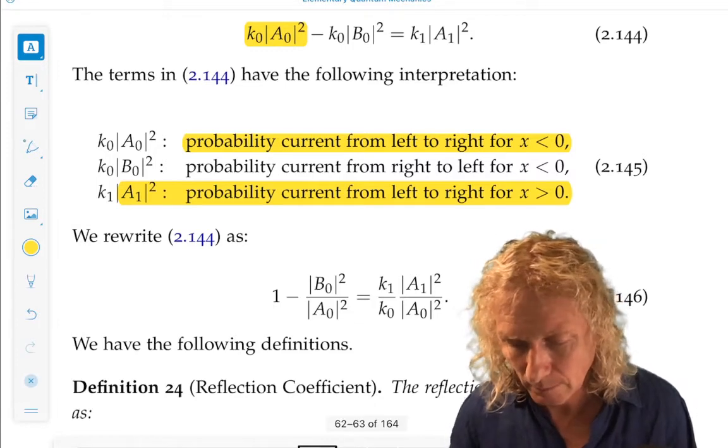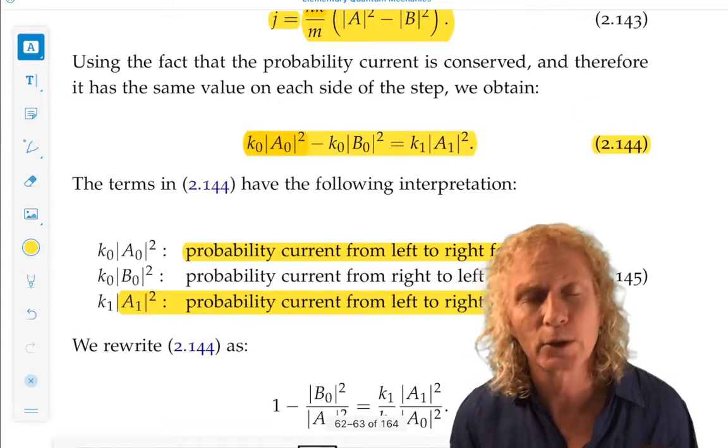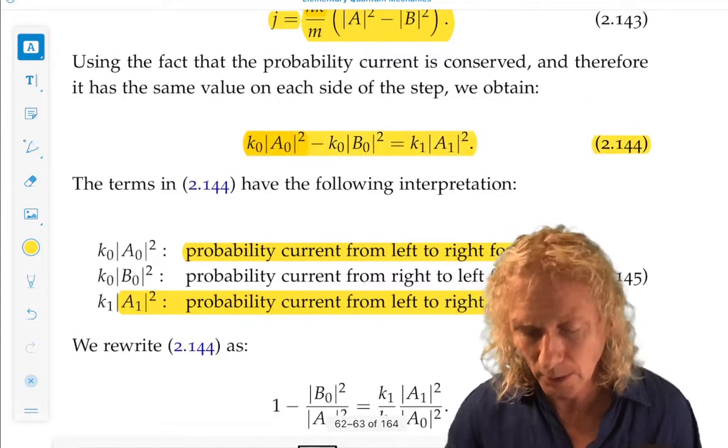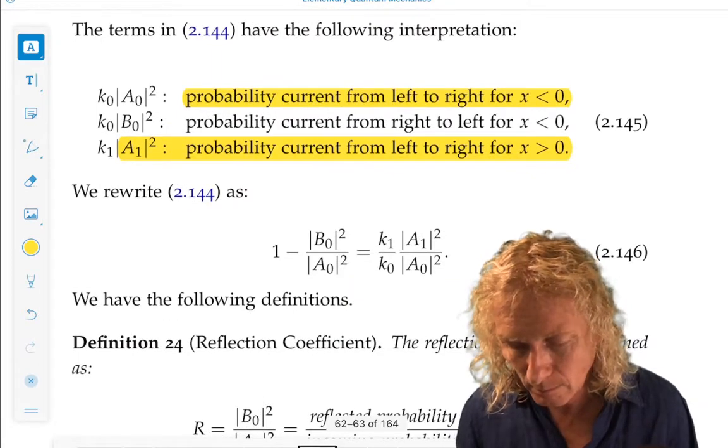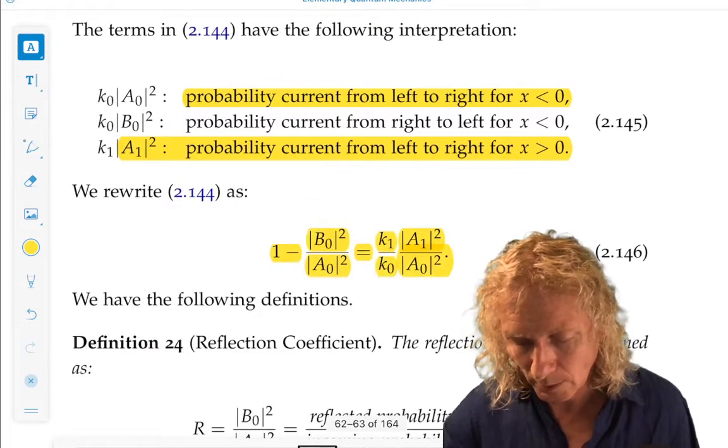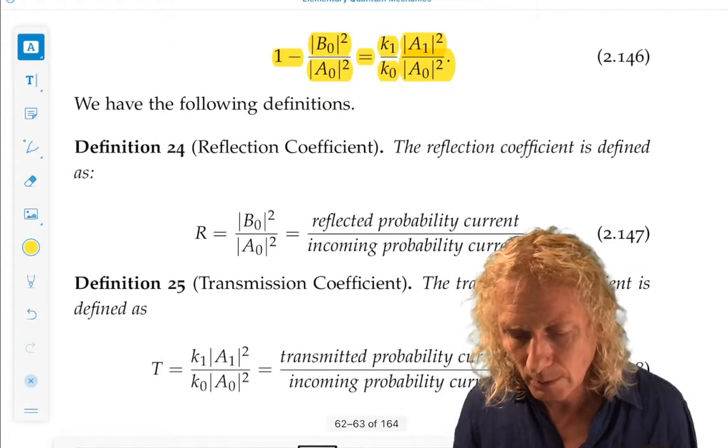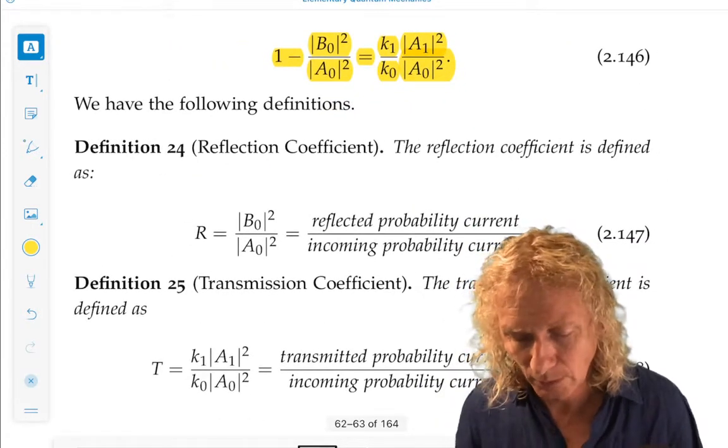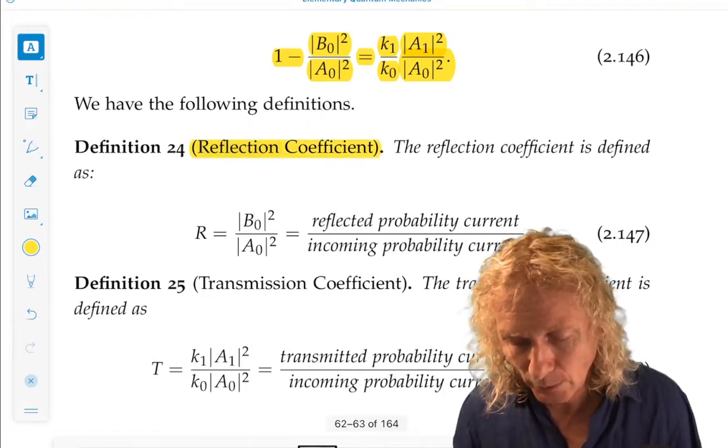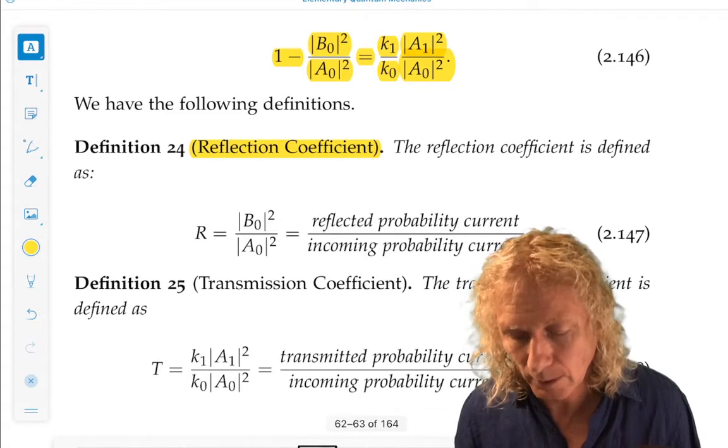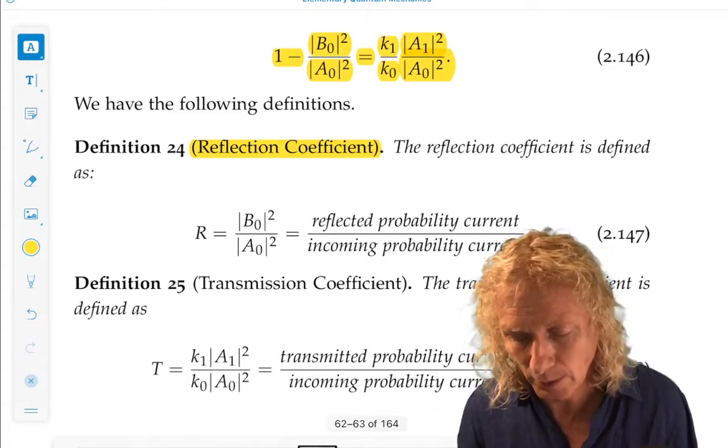Now, we can rewrite this expression for probability current being equal on either side. And you get this expression. And this leads to two definitions from this expression. The reflection coefficient, which is the reflected probability current divided by the incoming from left to right probability current.